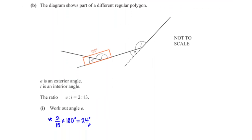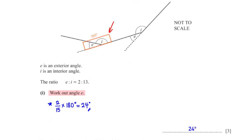The diagram shows parts of a different regular polygon. E is an exterior angle and I is an interior angle. The ratio E to I equals 2 to 13. Work out angle E. Angles on a straight line add up to 180 degrees, so E plus I equals 180. We take the ratio share for E — which is 2 out of a total of 15 — and multiply by 180 degrees, giving E equals 24 degrees.